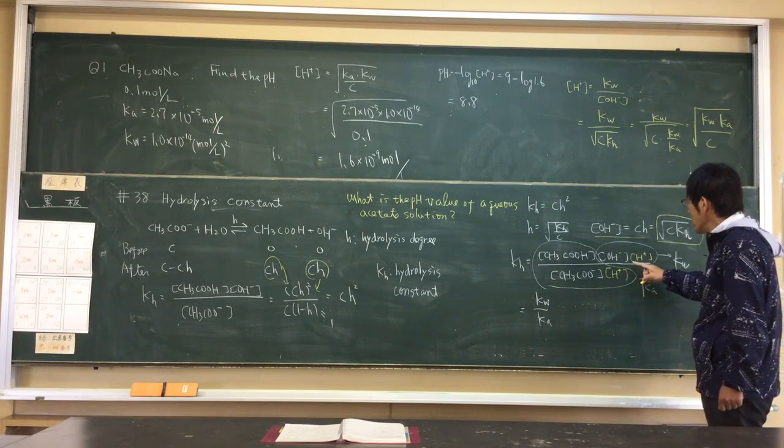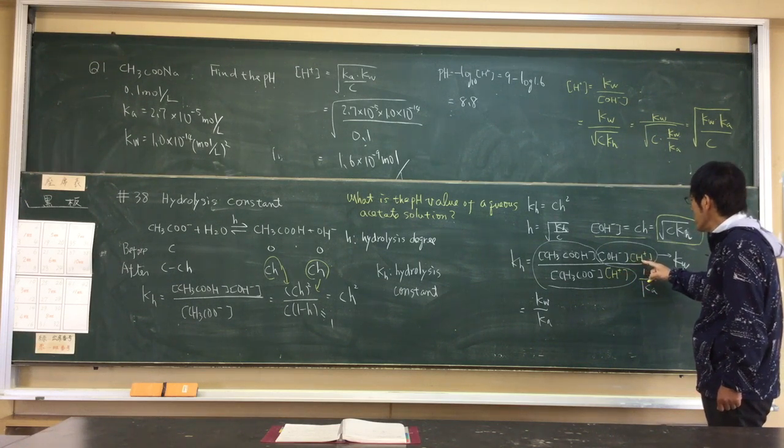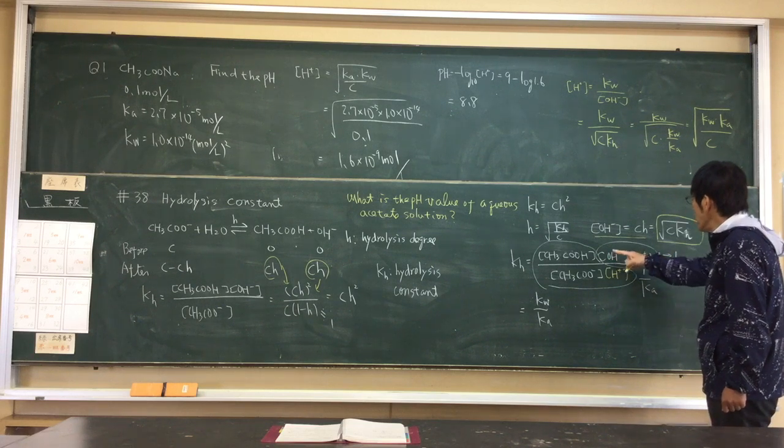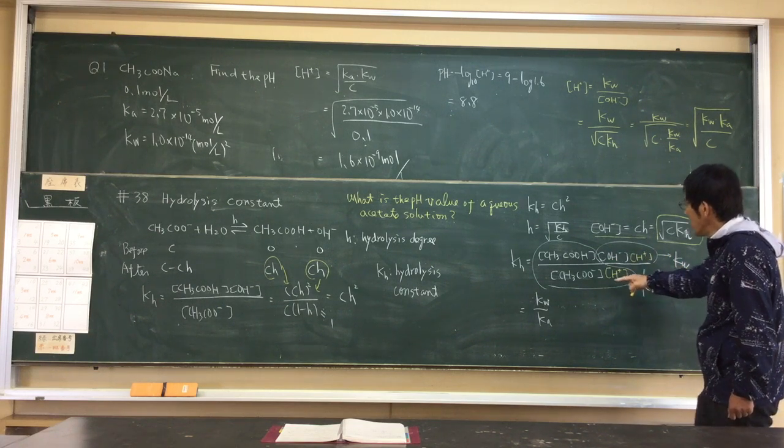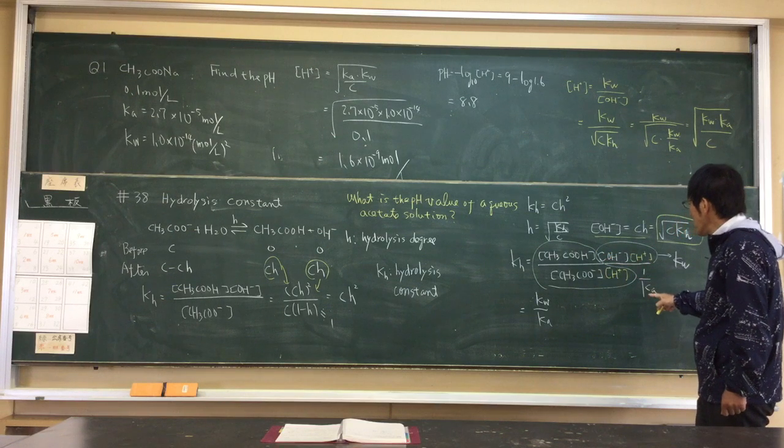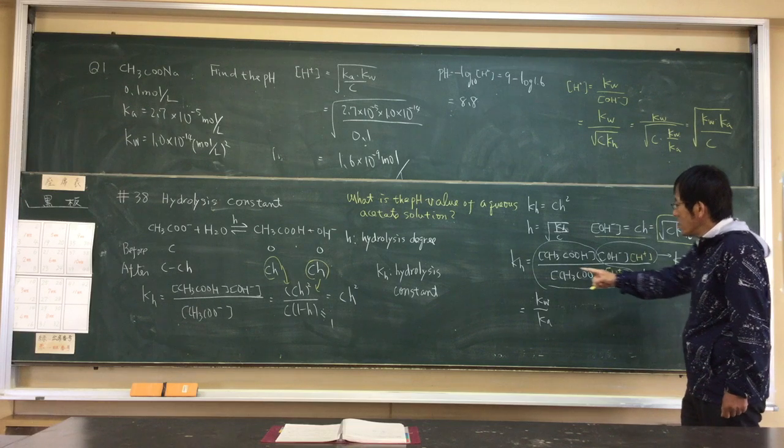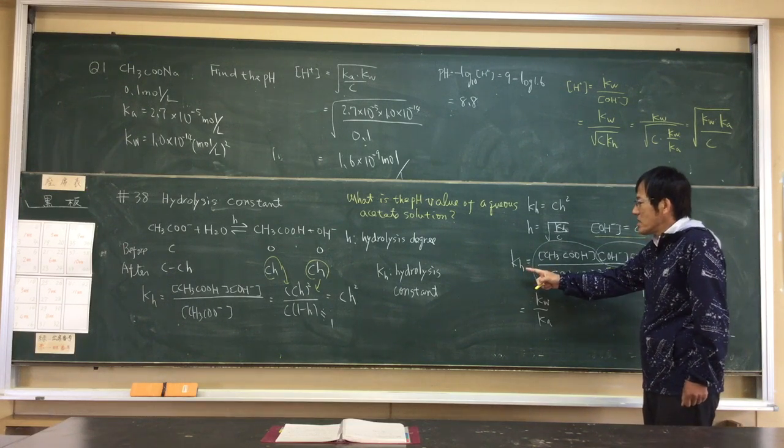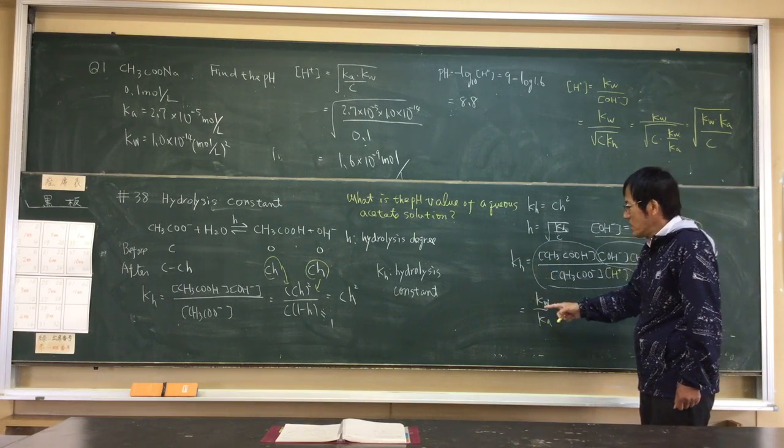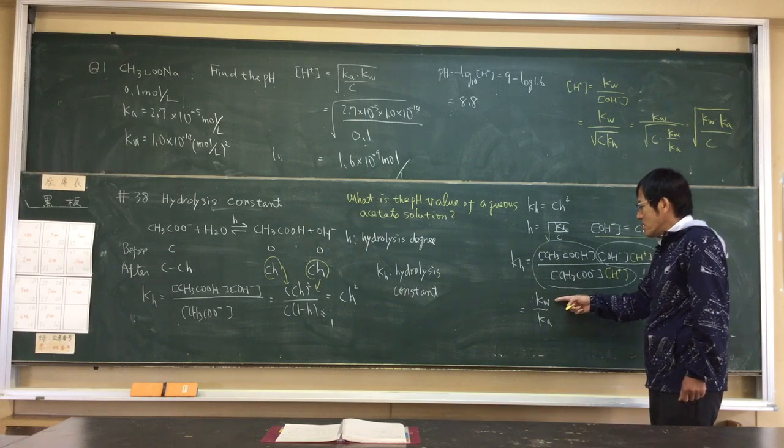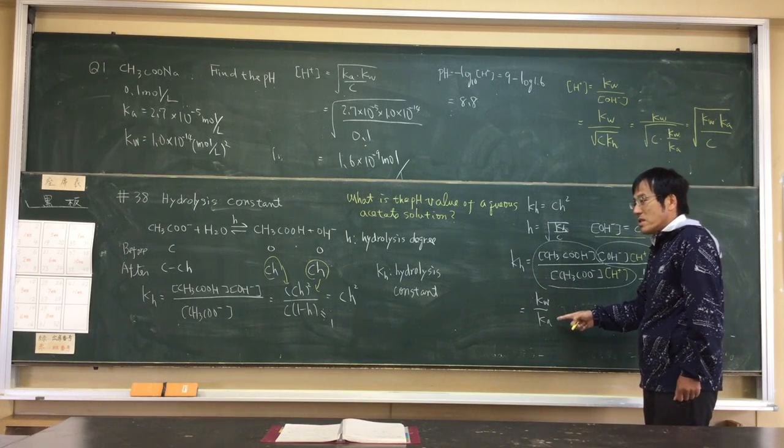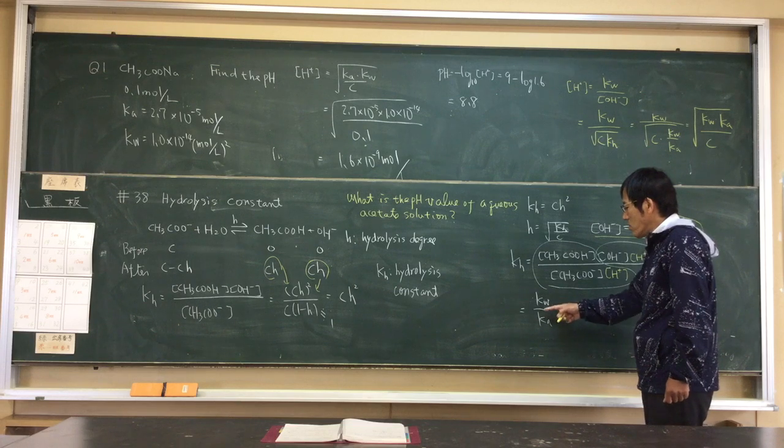Looking at the denominator and numerator, here KW, this part is 1 over Ka. We can express KH as KW over Ka.